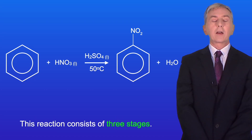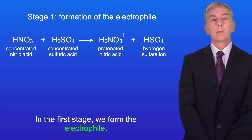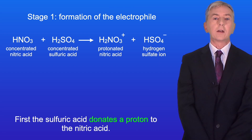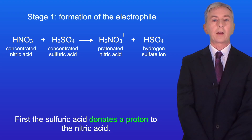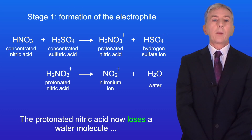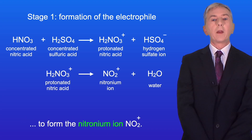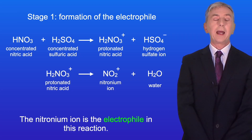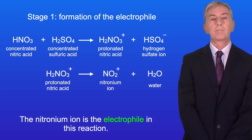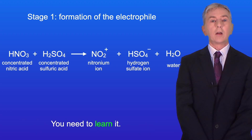This reaction consists of three stages. In the first stage we form the electrophile. The sulfuric acid donates a proton to the nitric acid, forming protonated nitric acid and the hydrogen sulfate ion. The protonated nitric acid then loses a water molecule to form the nitronium ion NO2+, which is the electrophile in this reaction. The overall equation for the formation of the electrophile is shown here, and you need to learn it.